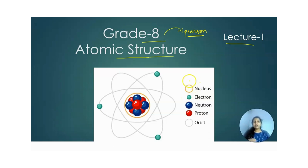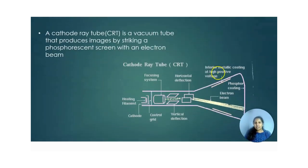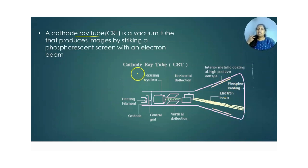Today, in this first lecture on atomic structure, we are going to learn about the CRT — the cathode ray tube. So what is the cathode ray tube? It is a device that produces images by striking an electron beam onto a screen.